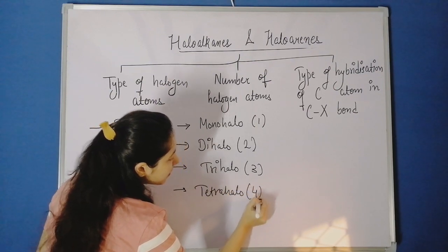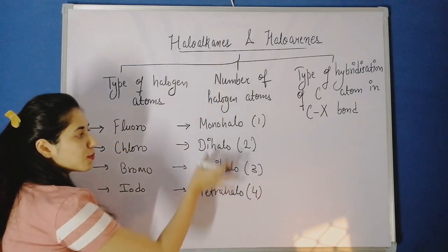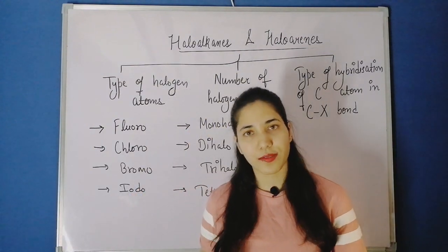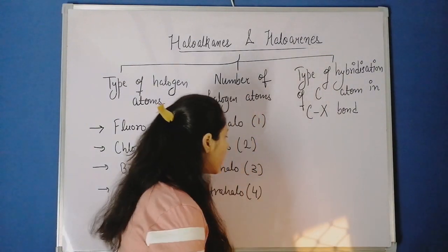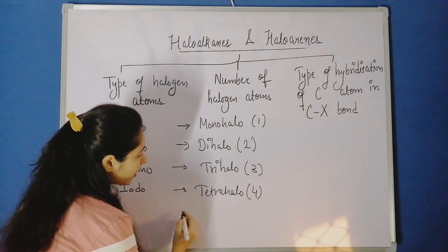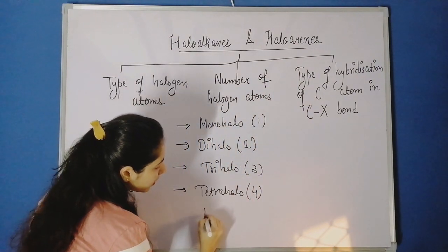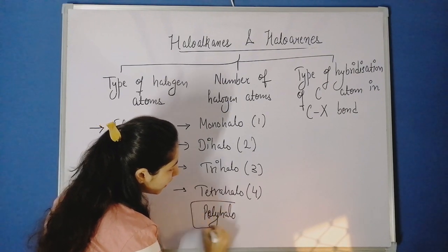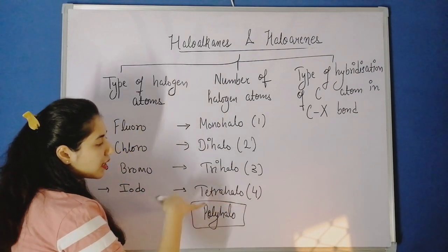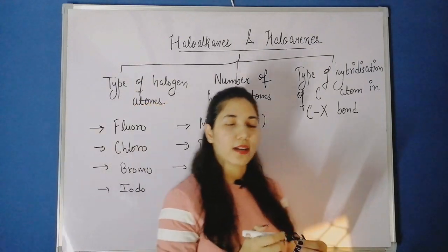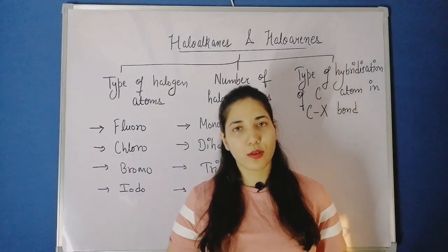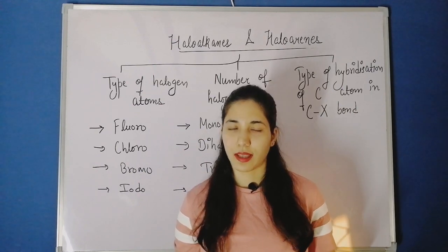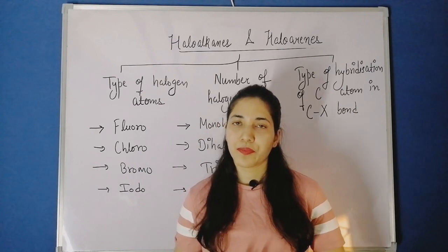So based on how many halogen atoms are present, we can classify the compounds. If we have three or more halogen atoms, we can call them polyhalogen compounds.